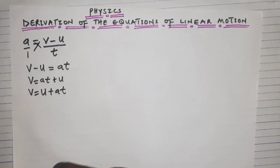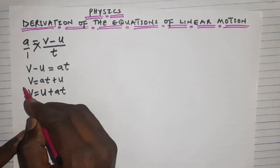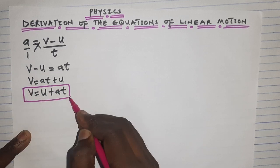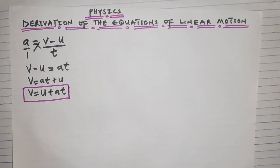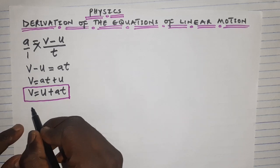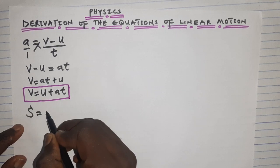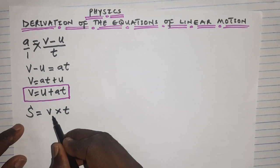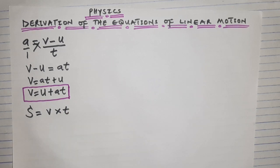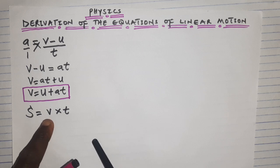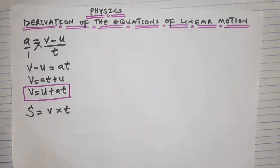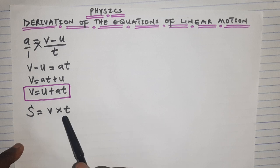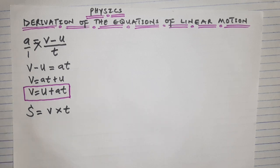This is our first equation of linear motion. Before getting the second equation, we consider the formula for distance: s = speed × time. I'm using speed for v here because I'm considering the magnitude of velocity — speed is a scalar quantity without direction.